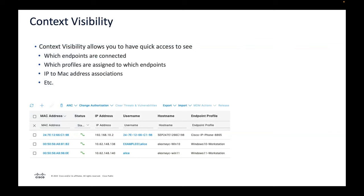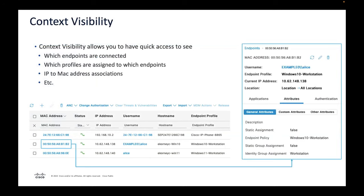The visibility setup wizard lets you run nmap scans to get a sense of what's out there if you're just starting out — good for proof of concept or small deployments, but not recommended for full production networks. Once endpoints are coming in, use context visibility to see all your endpoints, their attributes, and custom attributes. You can edit those custom attributes as you learn things, and also edit them via API.